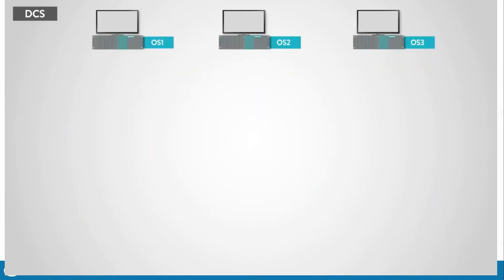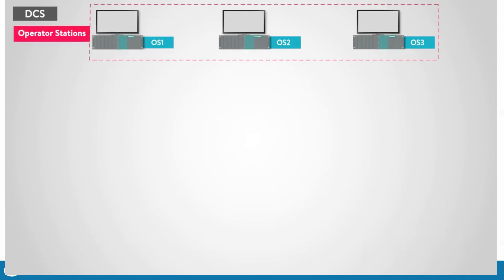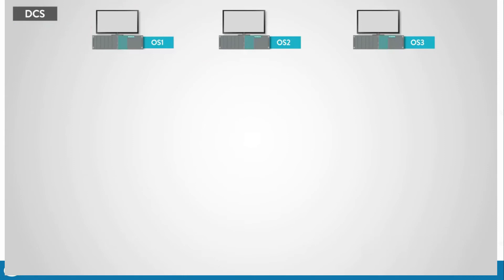A typical plant starts with a centralized operator control center, typically called operator stations. Operator stations in a DCS are the heart of the system. This is where the operator can observe the operations of the plant, view process warnings and alarms, monitor production, and more.